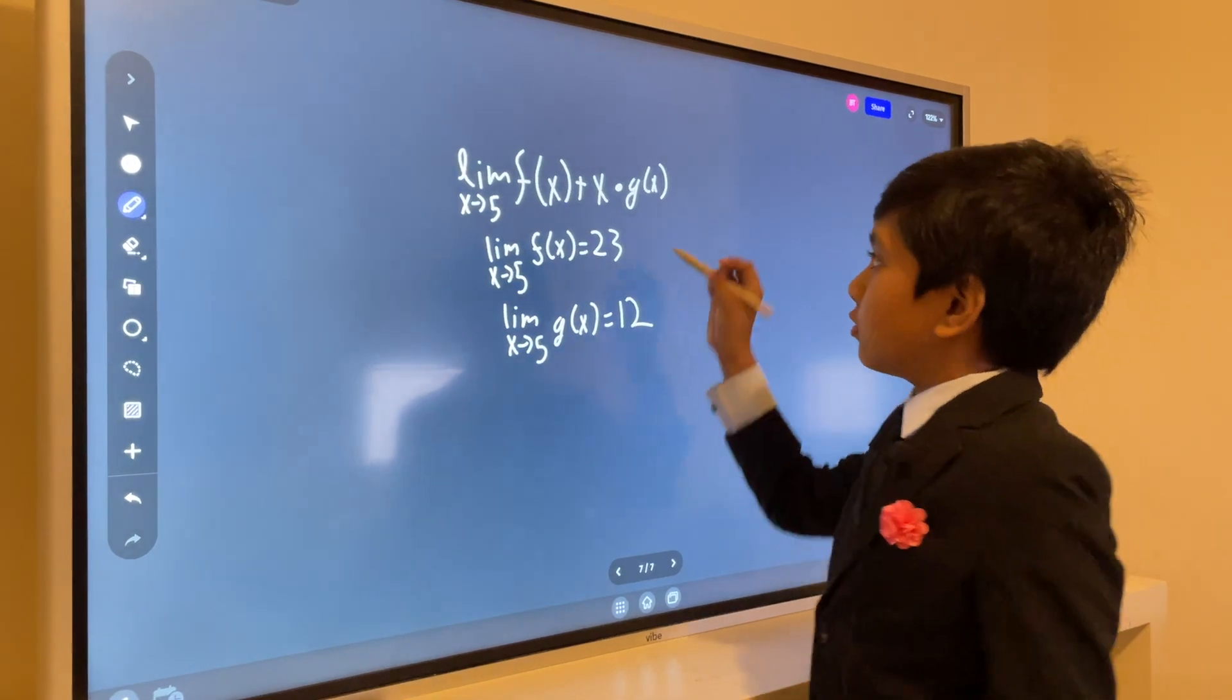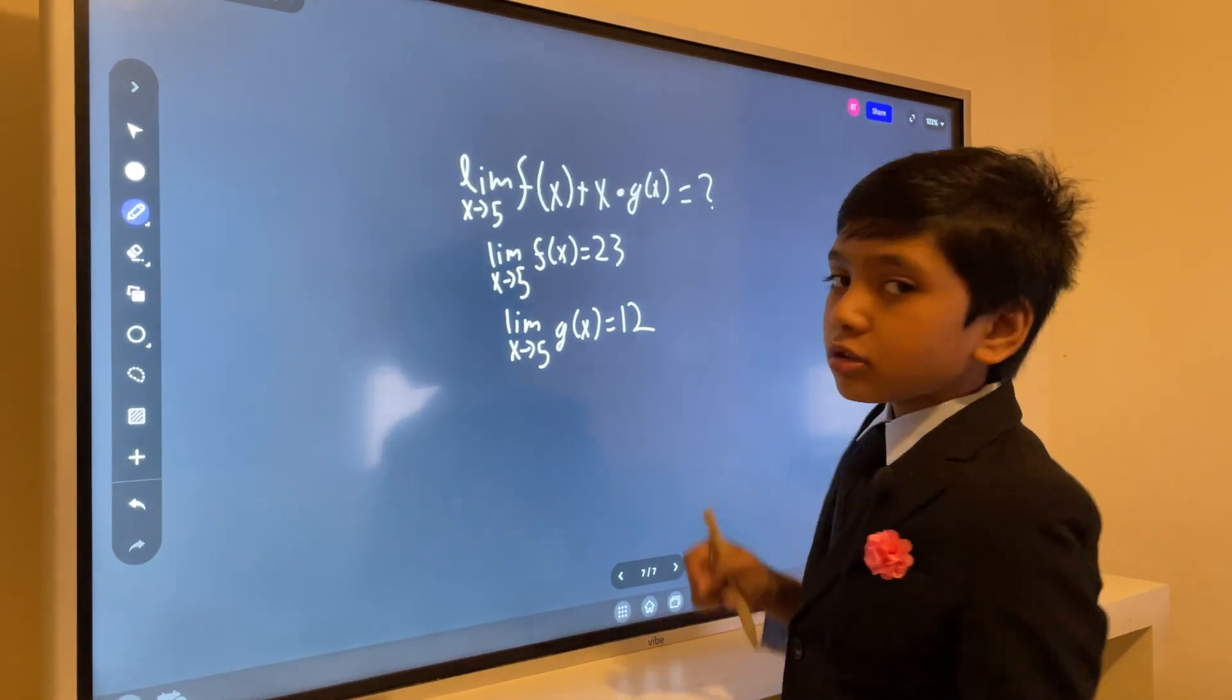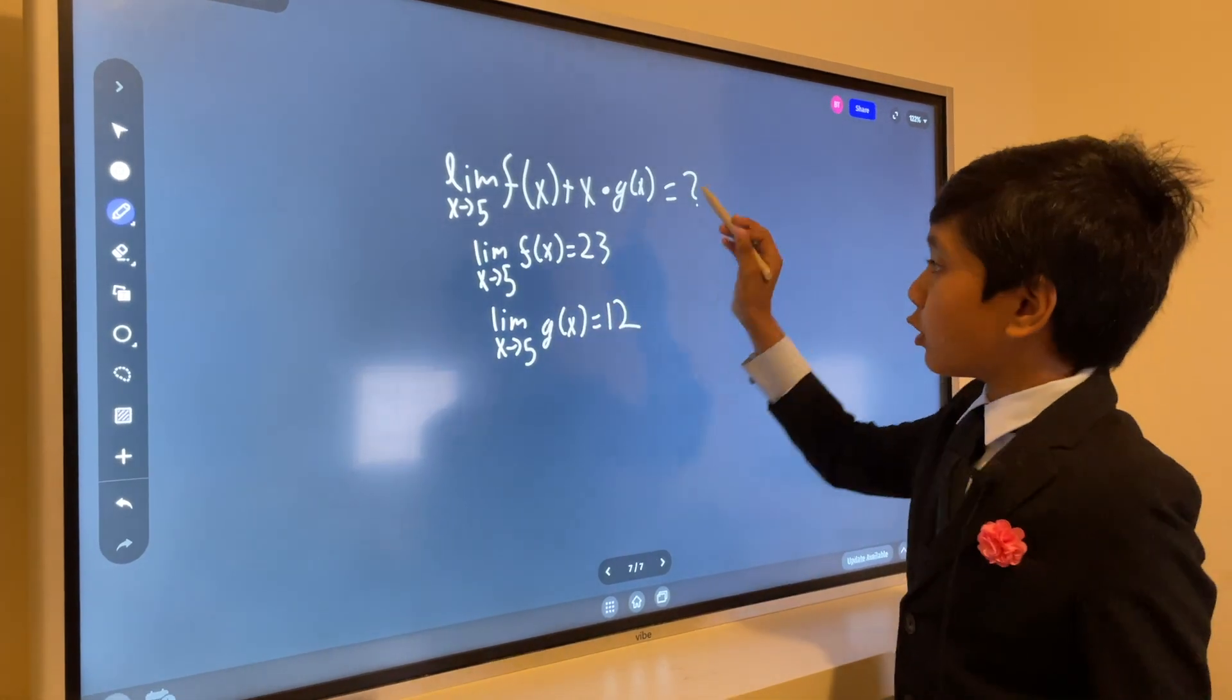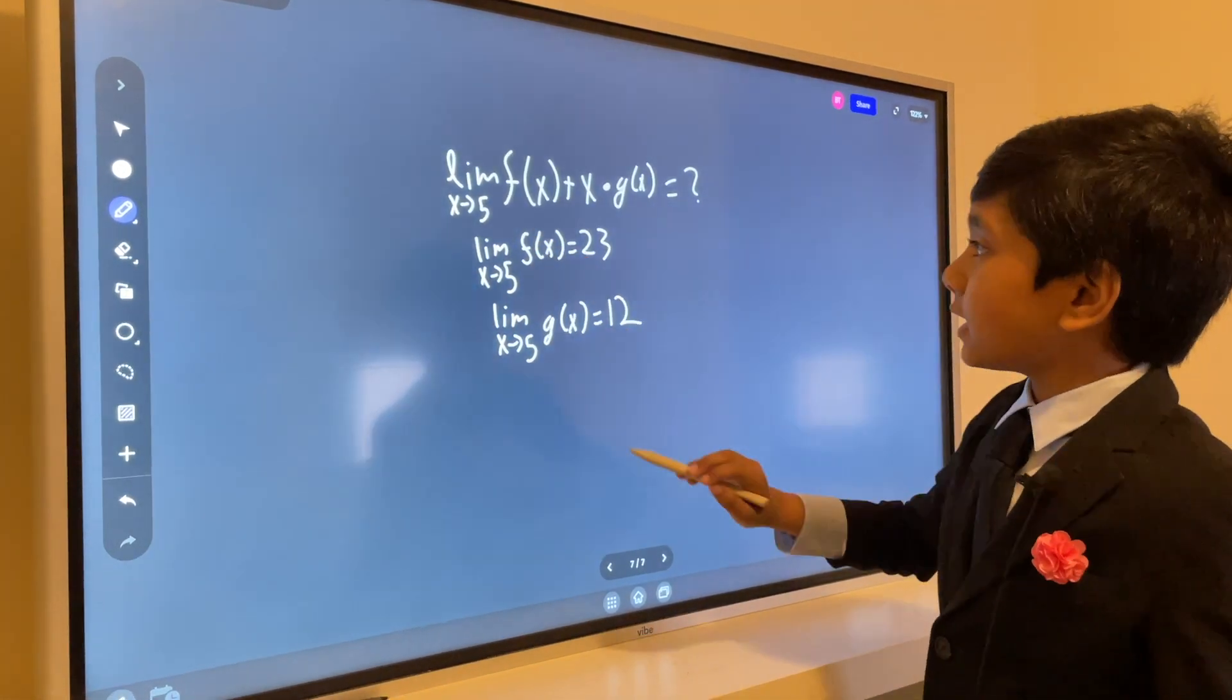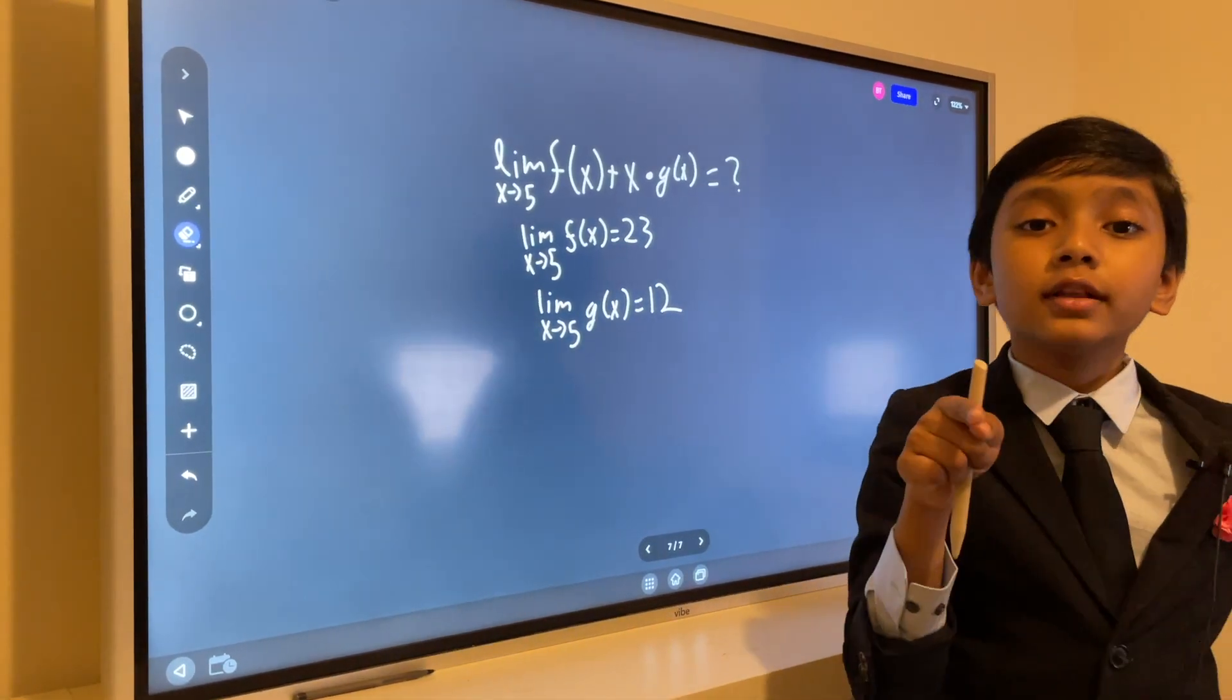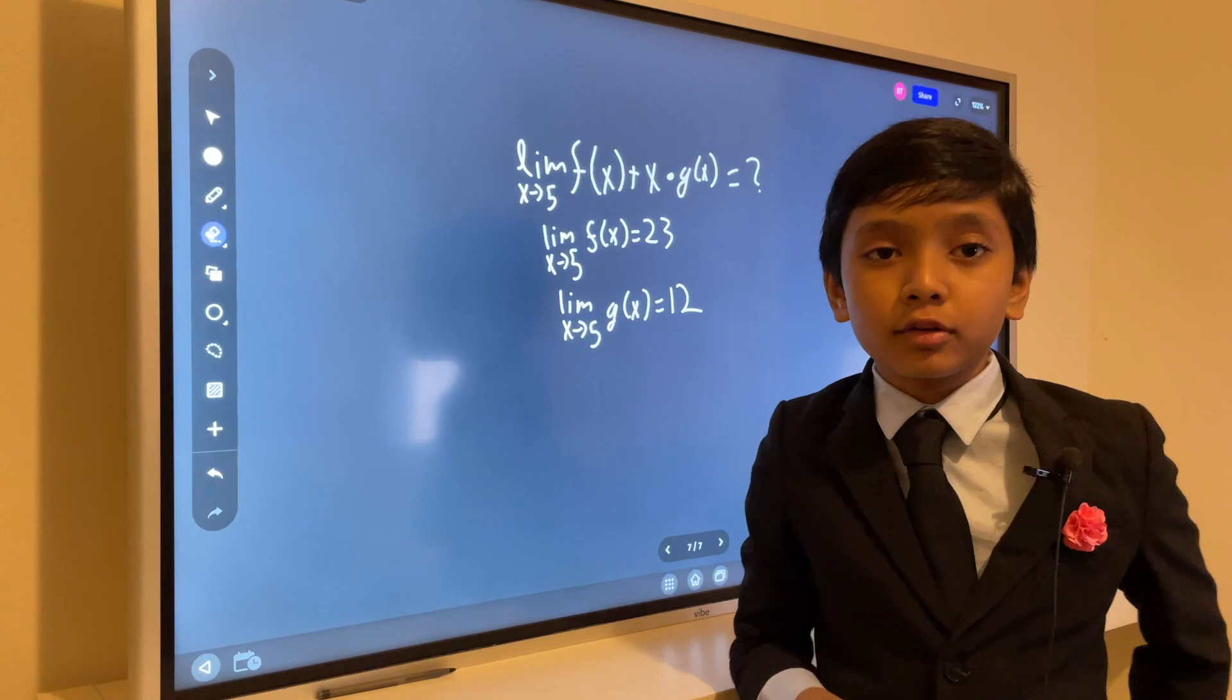Now, we not only want to find this, but this is what we want to find. So, limit as x approaches 5 of f(x) plus, you know the deal. So, I want you to pause the video and do it on your own.